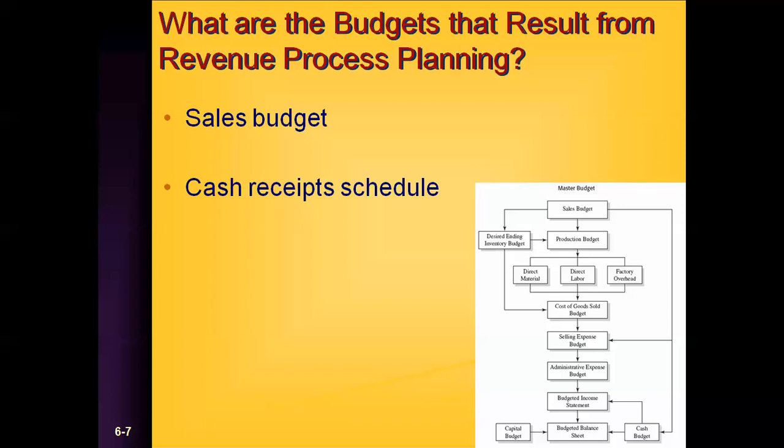As shown on this particular chart, the sales budget drives a lot of the other costs, such as the production budget. How many units you sell is going to determine how much direct material you need, how much direct labor you're going to need, how much overhead. It's also going to drive your cost of goods sold, as you remember when you put together your income statement in the business plan. That drives selling expense, administrative expense, budgeting income, and ultimately your balance sheets and capital budgets.